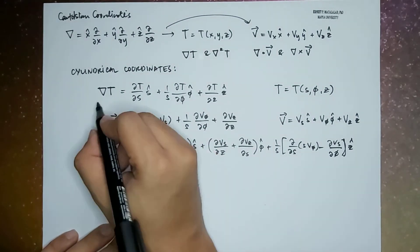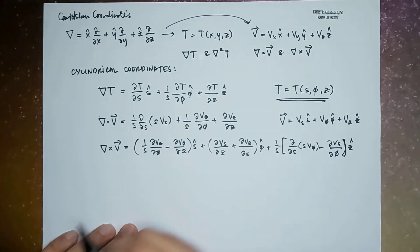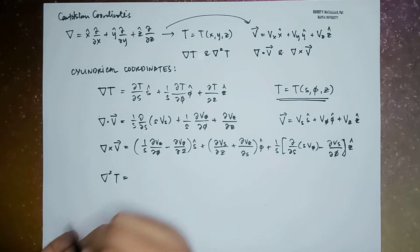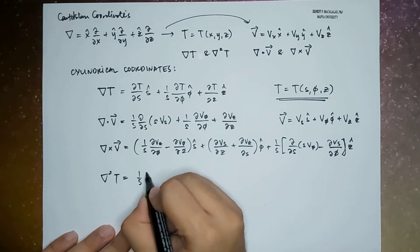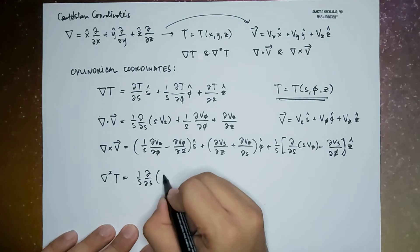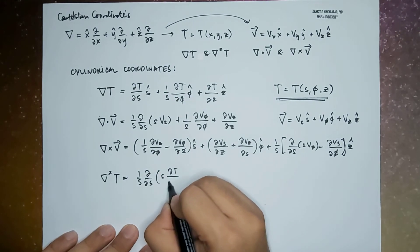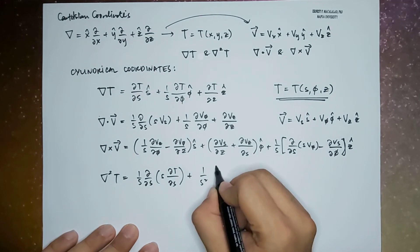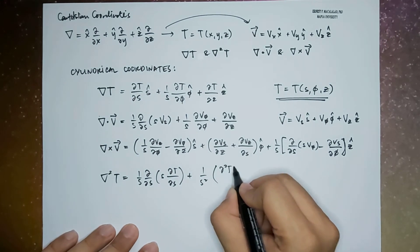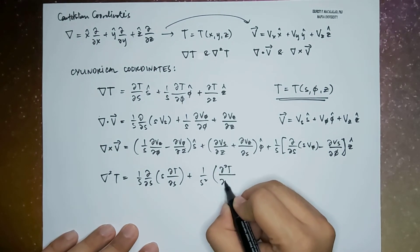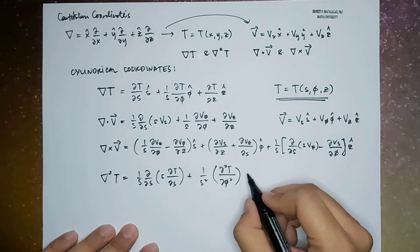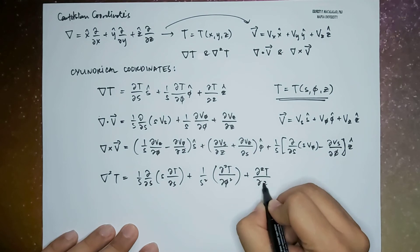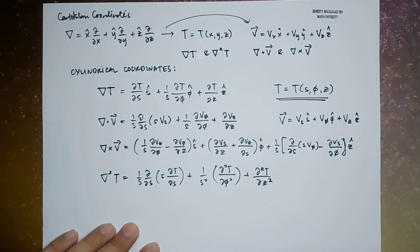And if we use the same scalar field t, the Laplacian is given by: 1 over s times the derivative with respect to s of s times the derivative of t with respect to s, plus 1 over s squared times the second derivative of t with respect to phi, plus the second derivative of t with respect to z.